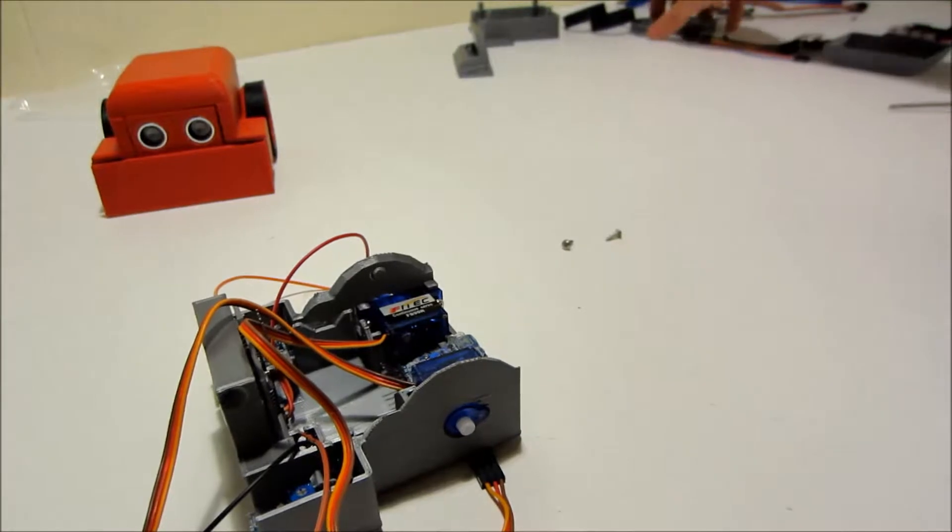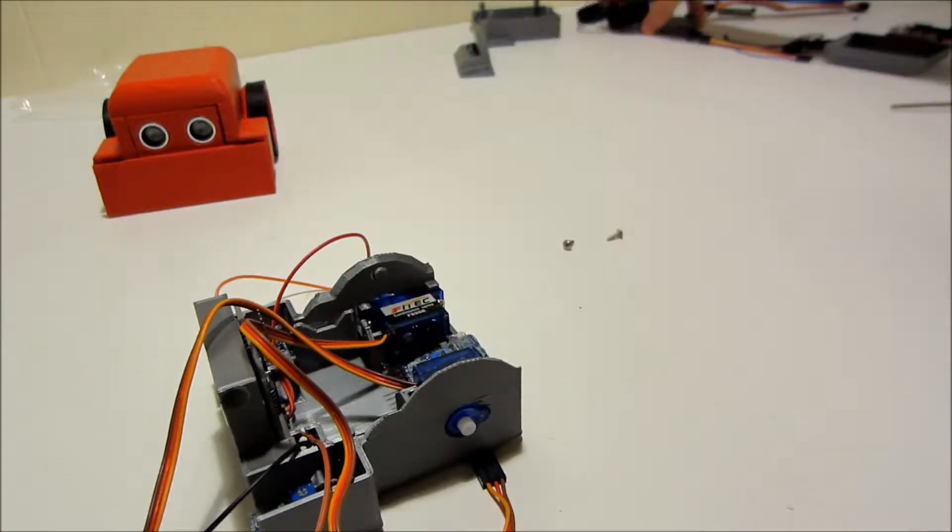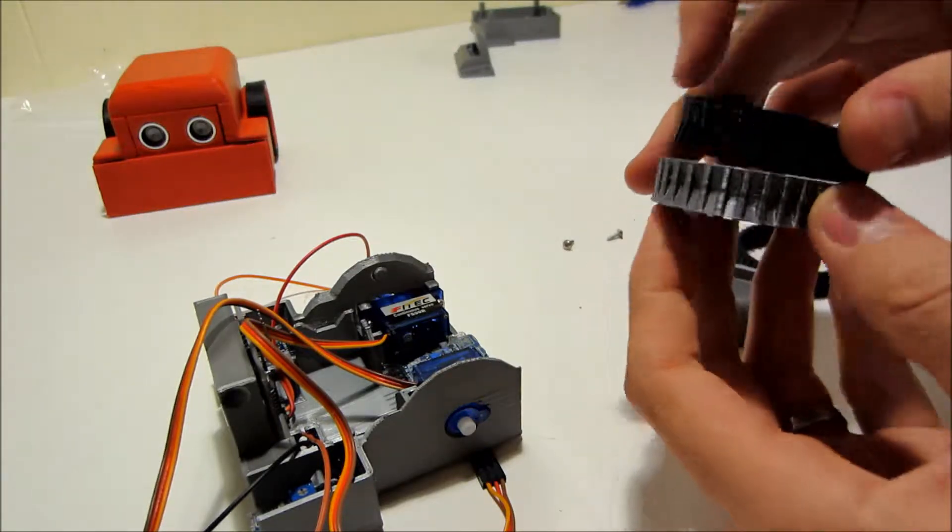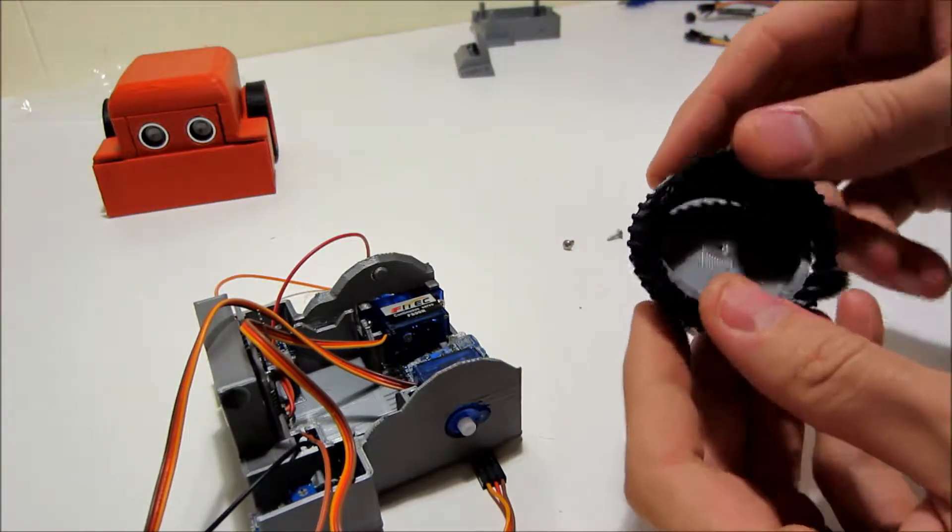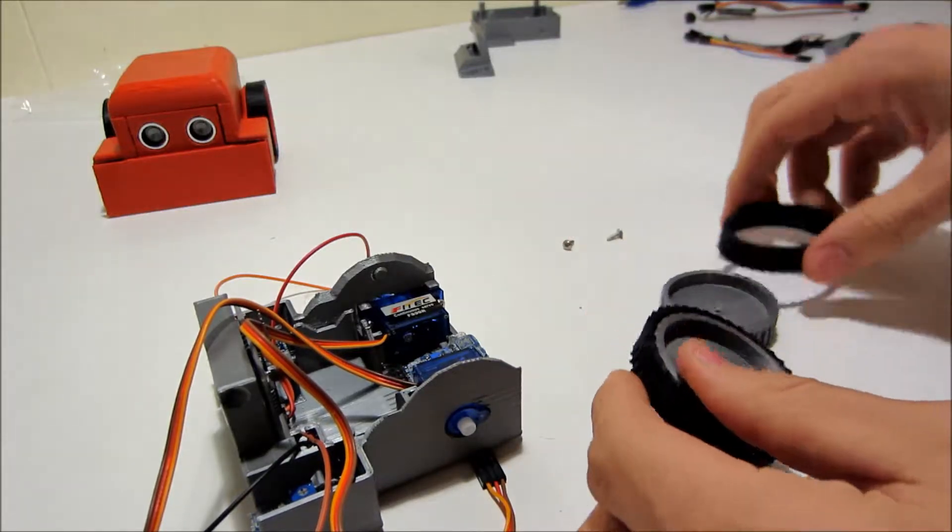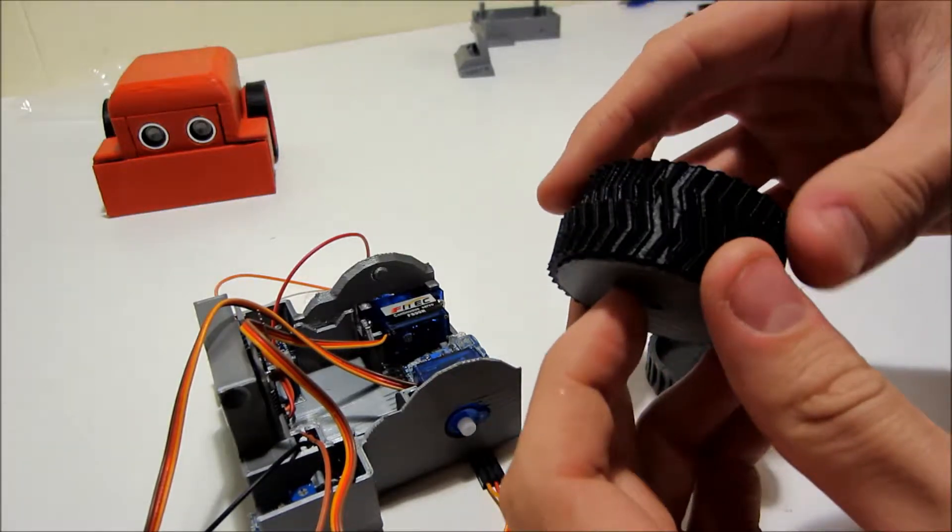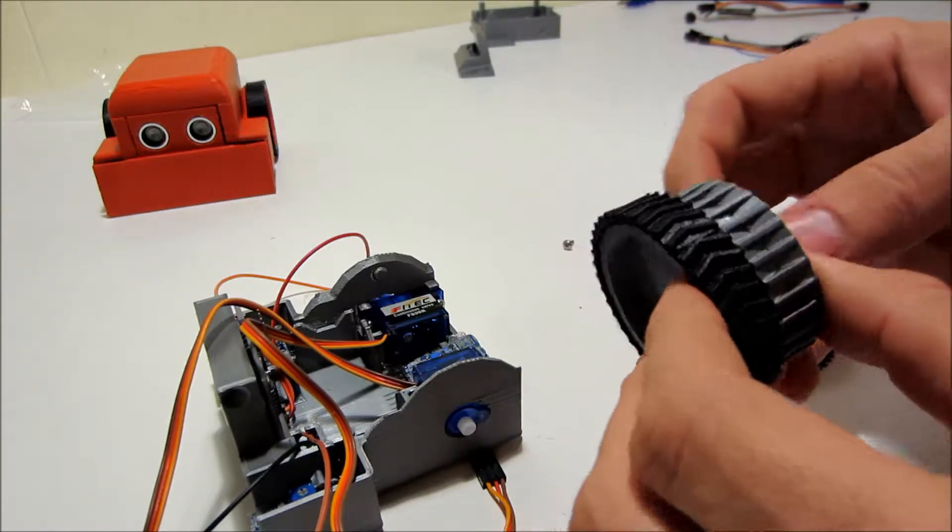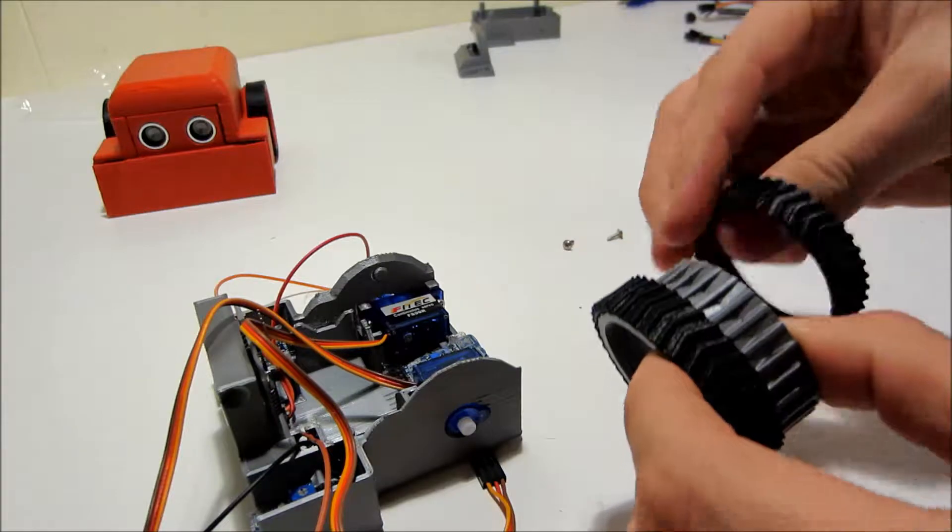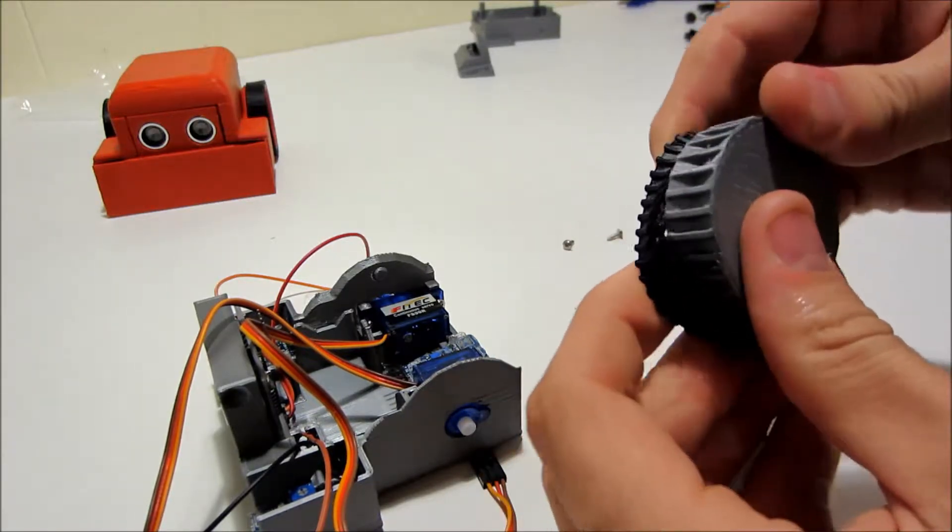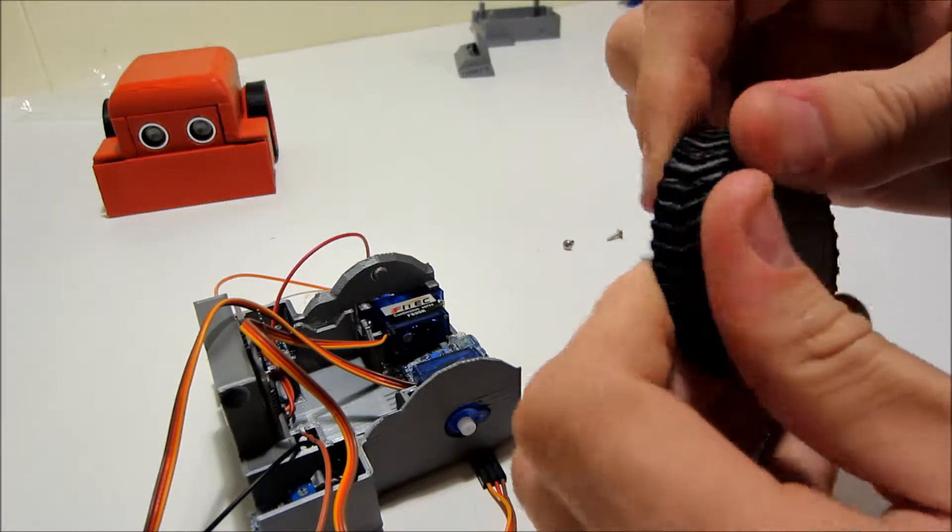Okay, let's pop the wheels on here. The wheels are, there's no wrong way to put these things on, just stretch it over. Or actually in this case these have treads, so I want to make them match on both sides of the robot with the treads going the same direction. Cool.